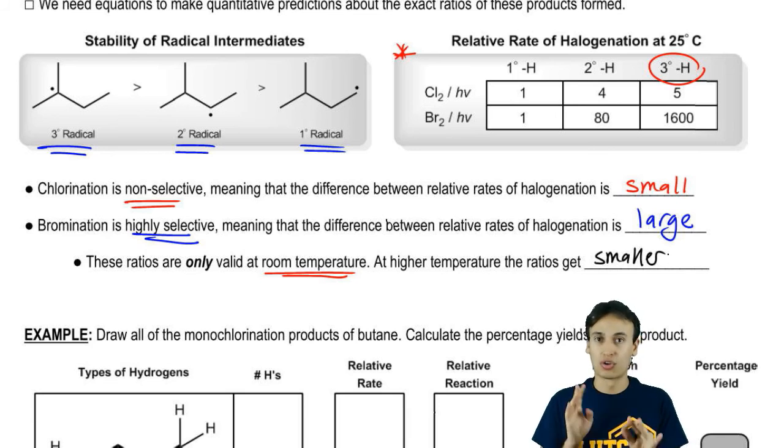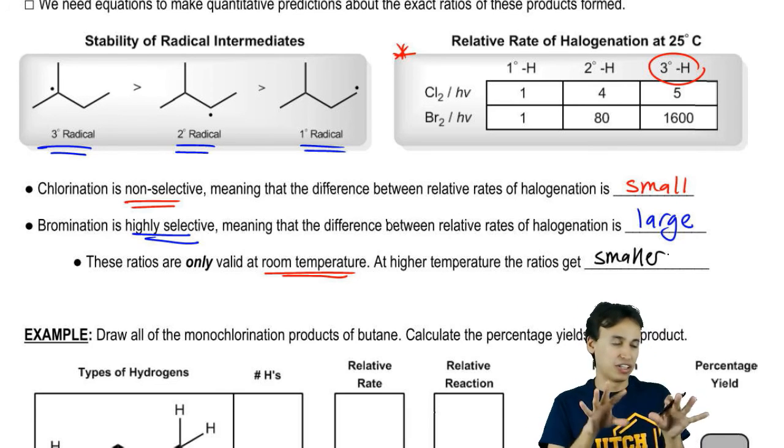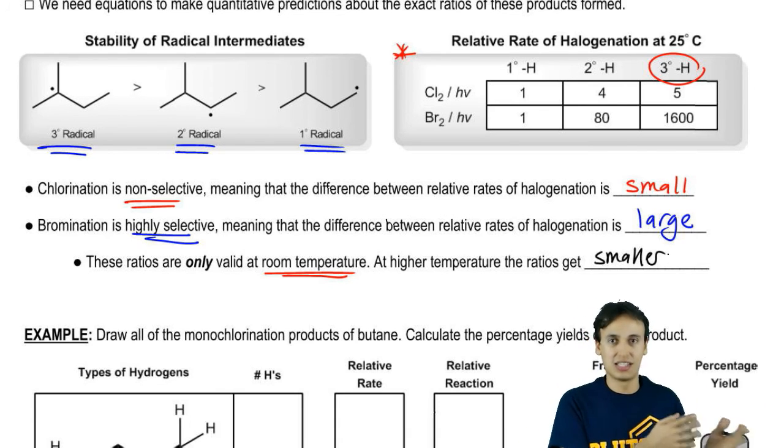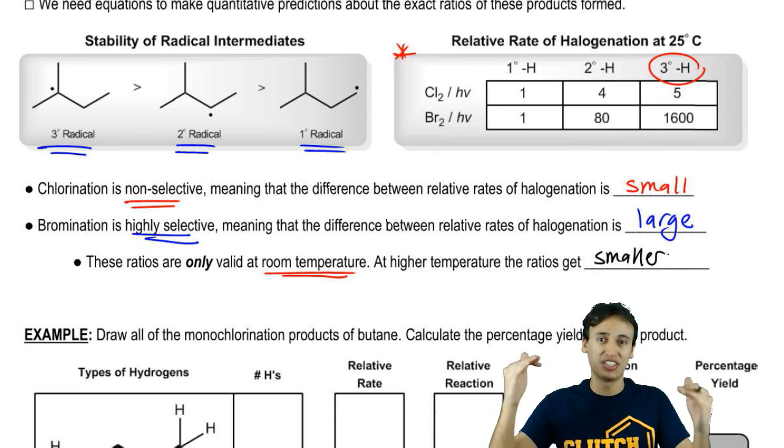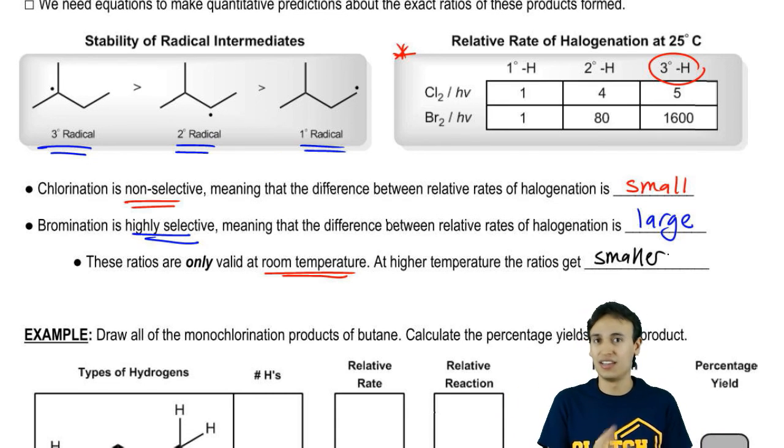But in general, the ranges are correct. It's 1, 4, 5, about there and then about 1, 80, 1600. If your professor teaches you different values, by all means, do not argue with him. Just go with his values. Everything that I'm saying is still going to pertain to that even if you have to use different values. Let's do it.